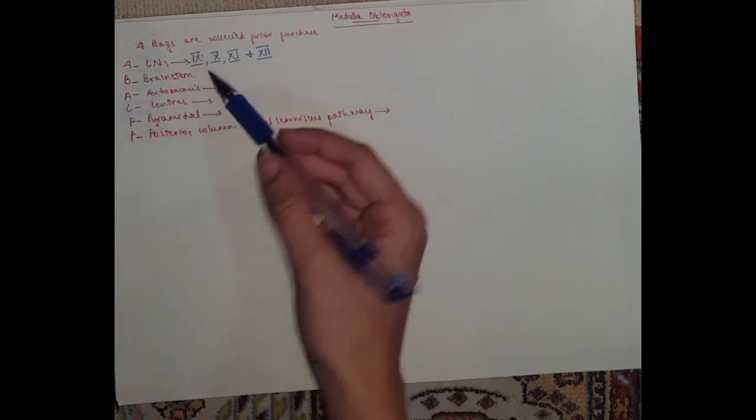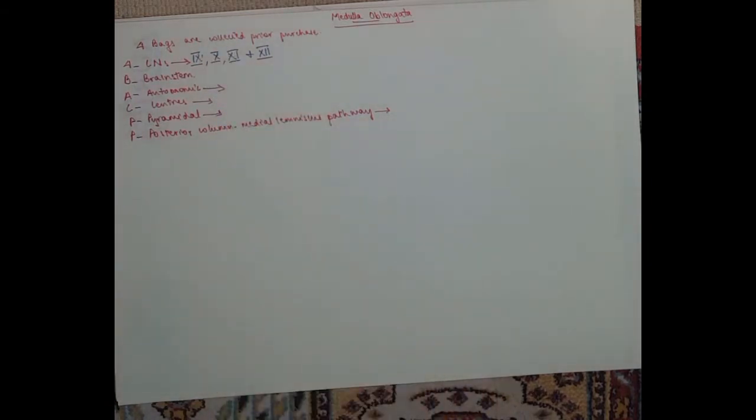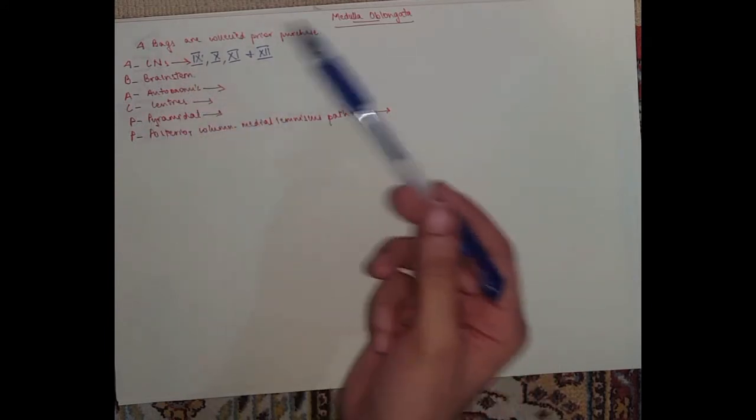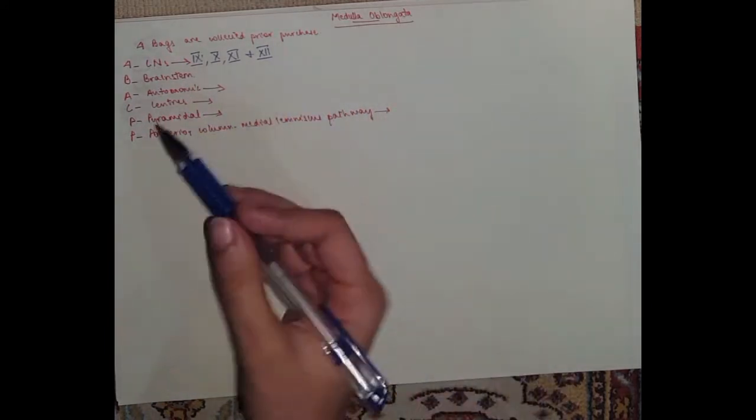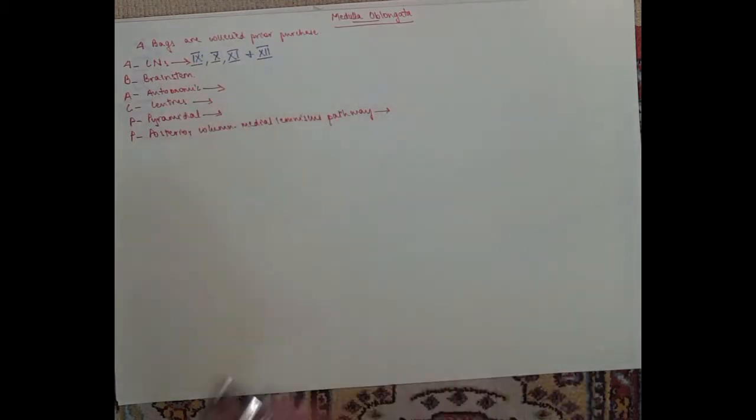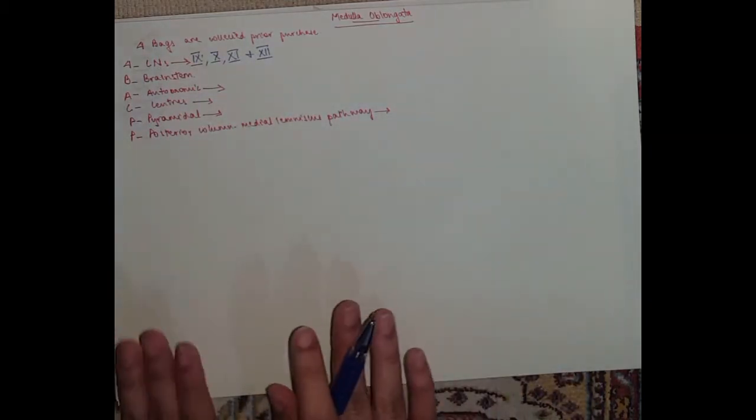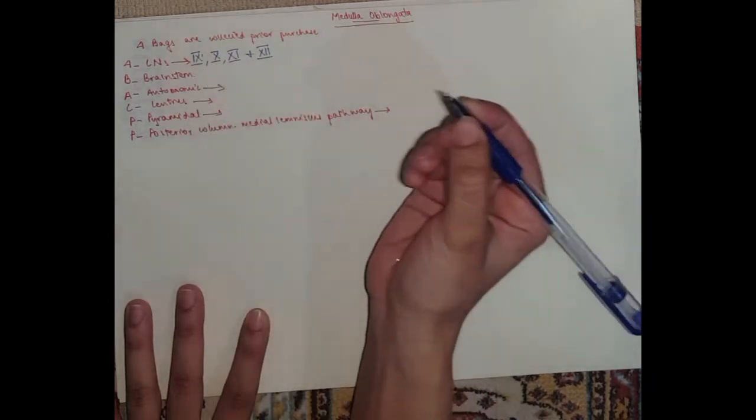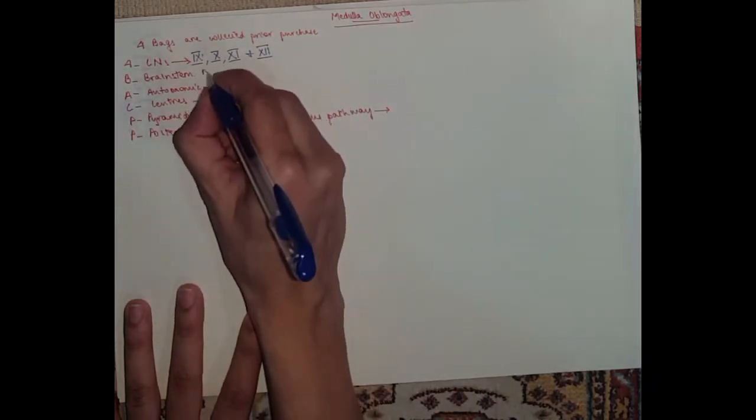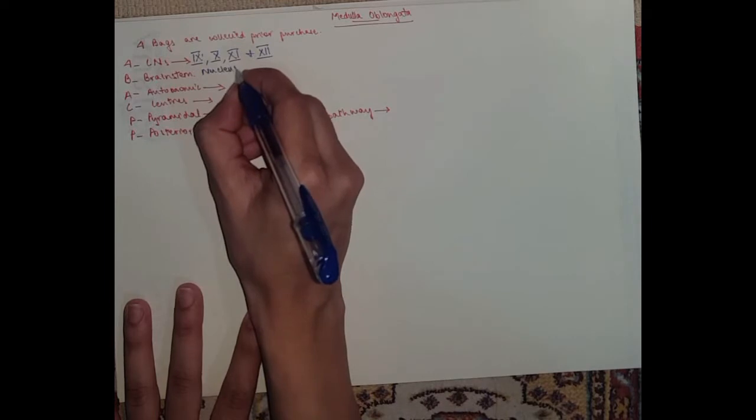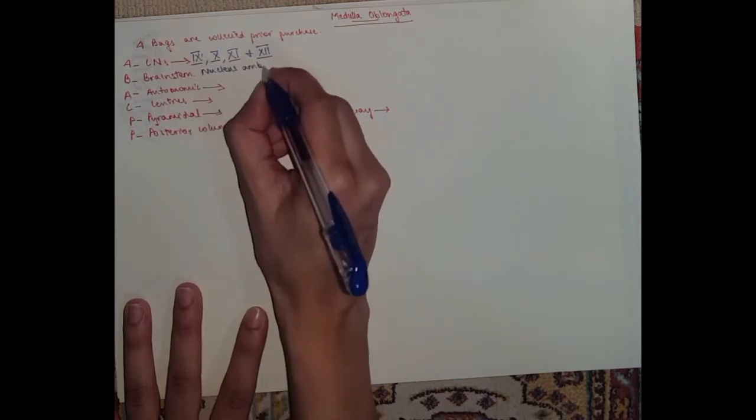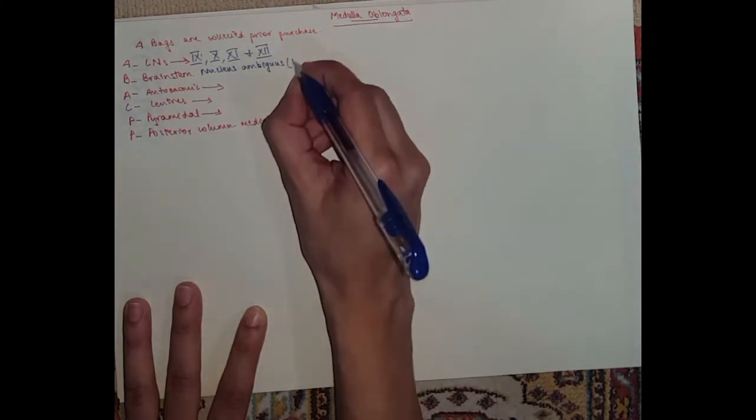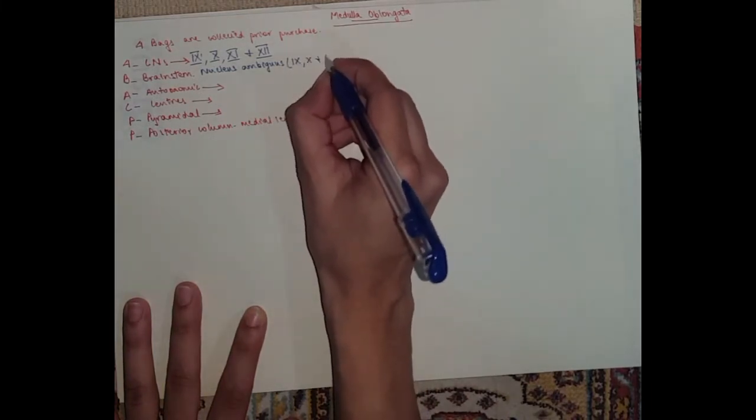So you need to know the nuclei of these cranial nerves because that means they terminate in the nuclei, and the nuclei are in the medulla oblongata. Generally, you need to know three such nuclei that are common for them. So you've got the nucleus ambiguus, that is for cranial nerves 9, 10, and 11.